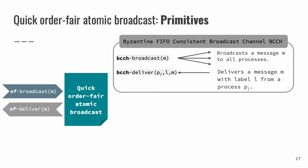The first primitive is called Byzantine FIFO Consistent Broadcast Channel, shortly BCCH. This primitive allows the processes to deliver multiple payloads and ensures a notion of consistency despite Byzantine senders. Intuitively, the channel ensures that if a message is delivered with some label, then the message itself is the same at all correct processes that deliver this label.